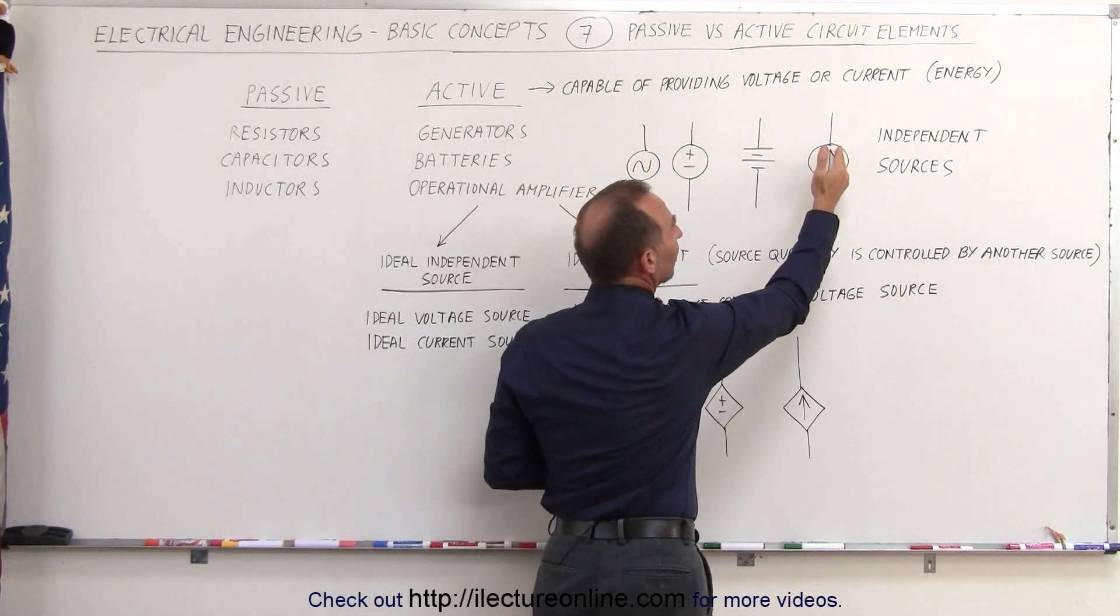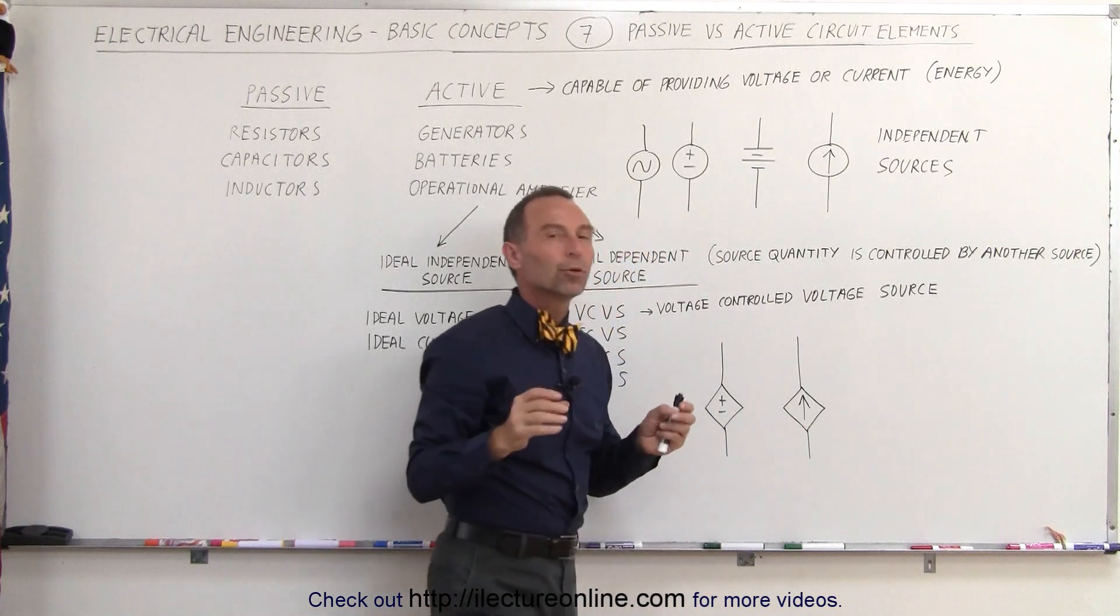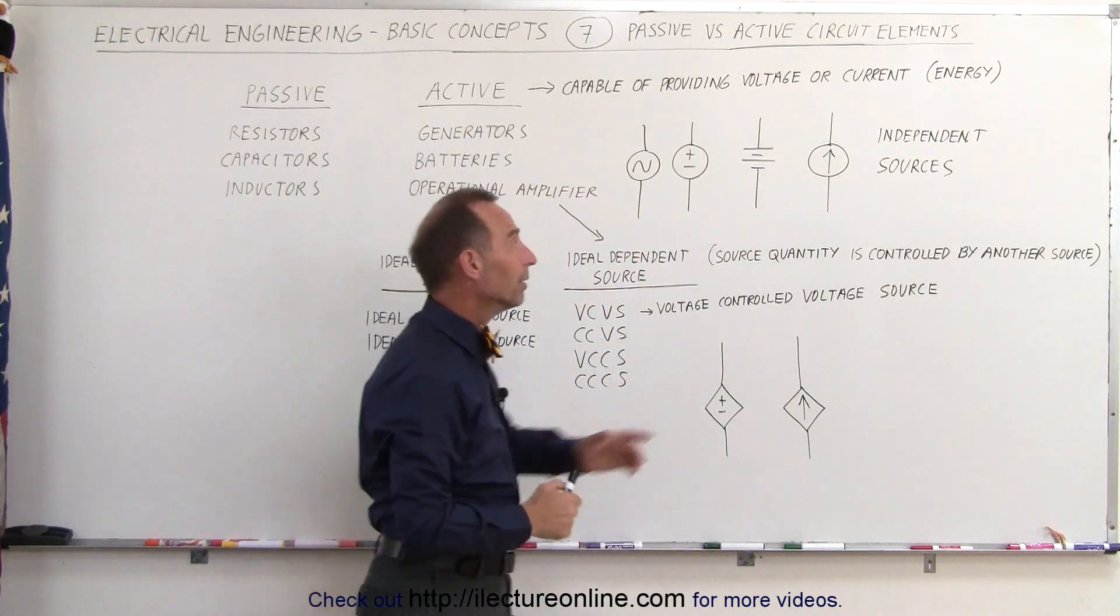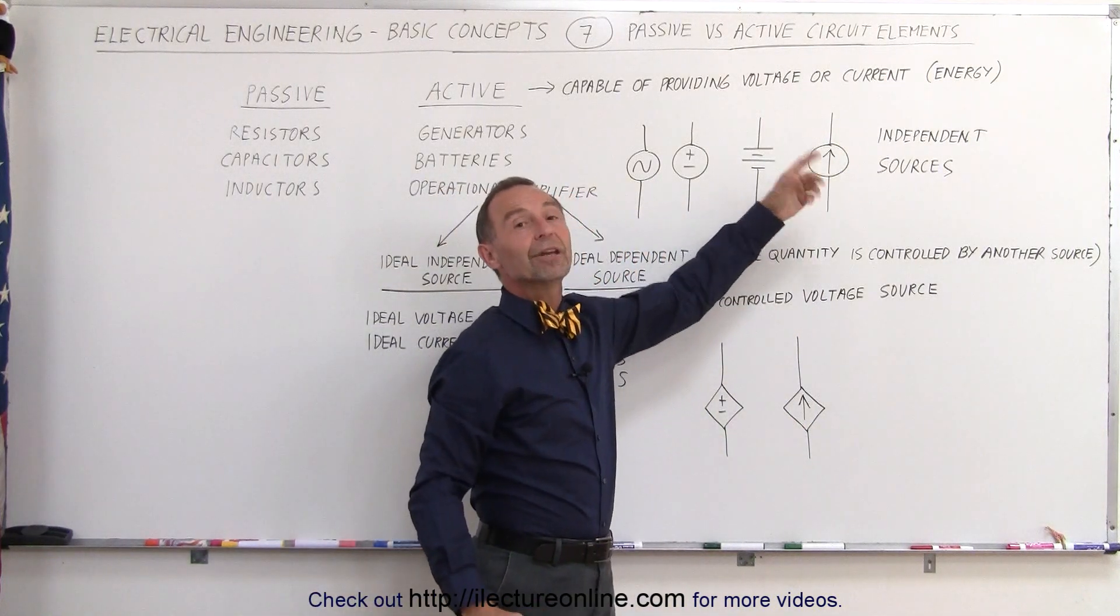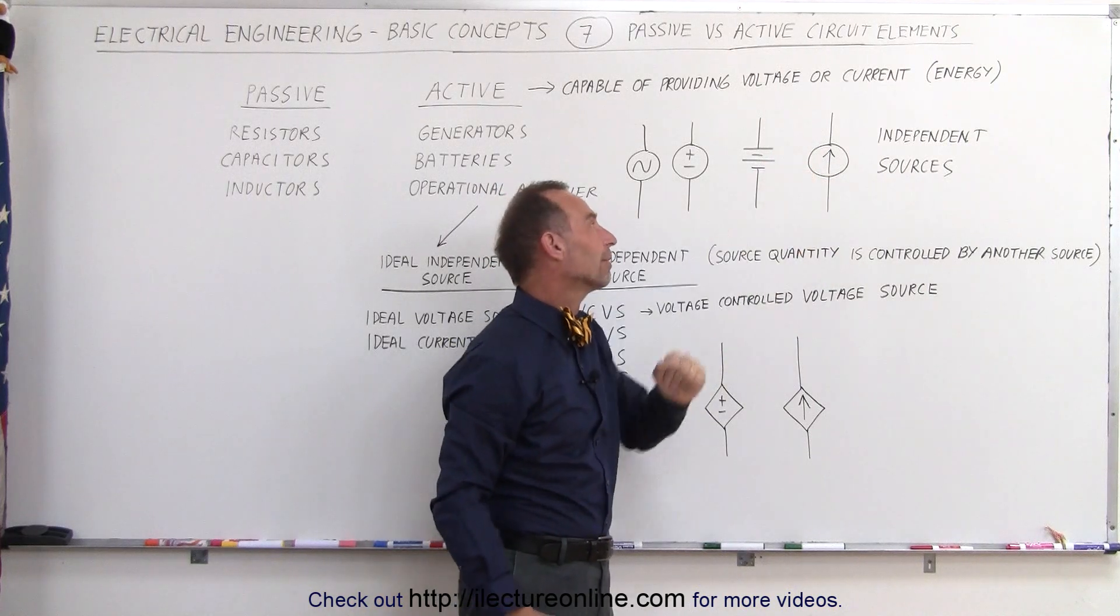If we have an arrow like this that means that it's a current supplier. It will produce all the current the circuit will require and it will do so independently of any source.